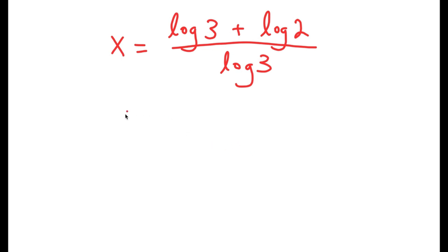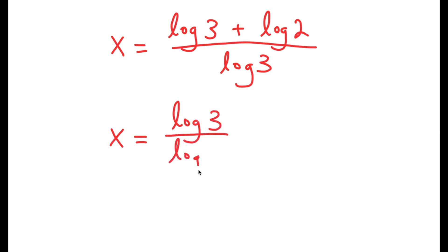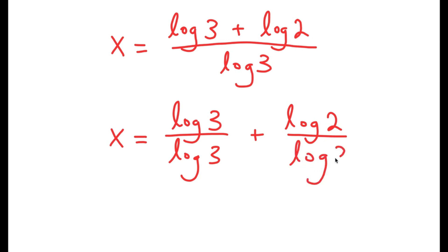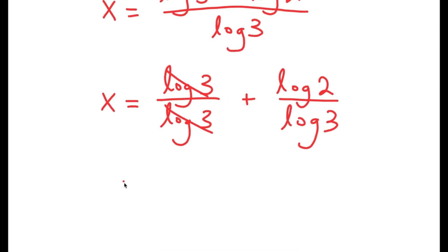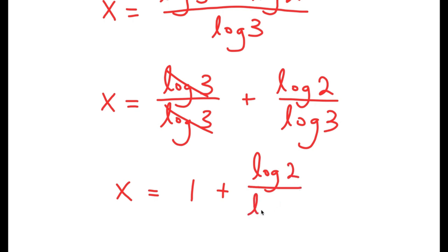Now this turns into log 3 over log 3 plus log 2 over log 3. And now log 3 over log 3 cancels out, so I get x is equal to 1 plus log 2 over log 3.